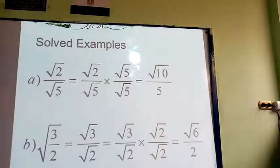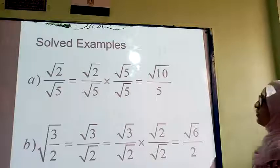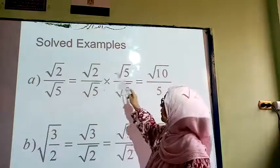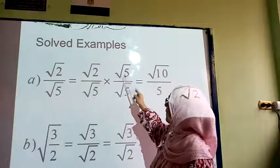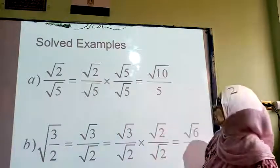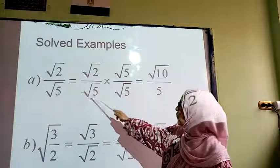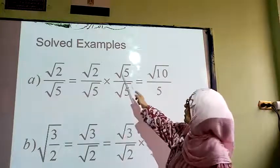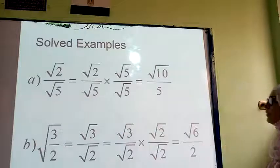Here is a solid example. Root 2 over root 5 — we want to remove this root, so I am going to multiply up and down by the same value. Root 5 times root 5 equals 5 for the denominator, and root 2 times root 5 equals root 10 for the numerator.